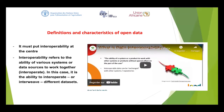The definition and characteristics of open data can be summarized by putting interoperability at the center. Interoperability refers to the ability of various systems or data sources to work together — that is, to interoperate — specifically the ability to interweave different datasets. GODAN has an extensive webinar on data interoperability, and we will look at the link to the GODAN website, which is spearheading open data in agriculture, so that you can watch this video on YouTube about what data interoperability really is.